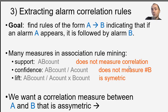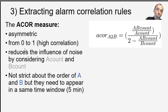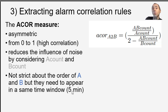To solve this, we designed a measure called ACOR (Alarm Correlation). It is defined by a formula that is asymmetric, ranges from 0 to 1 (where 1 means high correlation and 0 means low), and reduces the influence of noise by considering the frequencies of both A and B. It is also not very strict about order because timestamps are noisy — we consider A and B to appear together if they occur within the same 5-minute time window, based on expert recommendations.